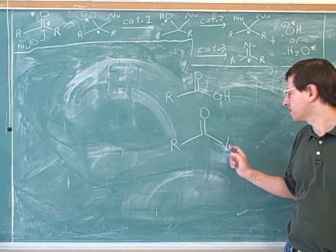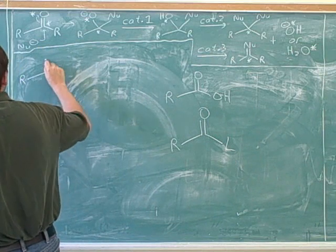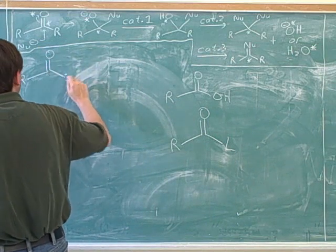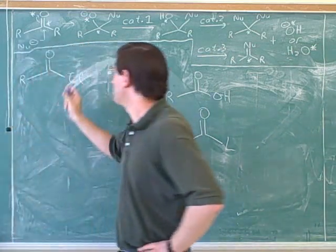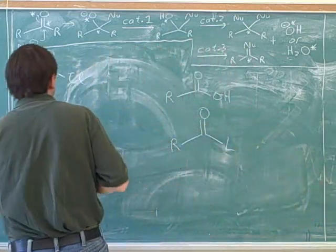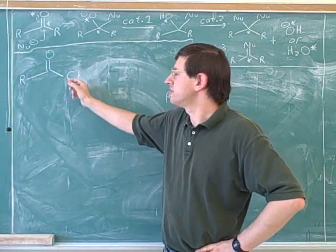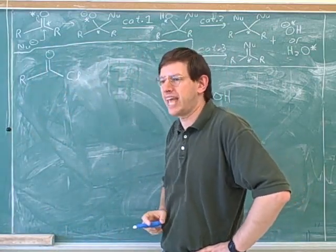So let's see some of the things that could be at this L position. For example, we could put a halogen. Here I have chlorine, so this would be a halogen. These are called, the general name for this is acyl halides. This would be an acyl chloride, but in general it could be an acyl bromide or a general acyl halide.